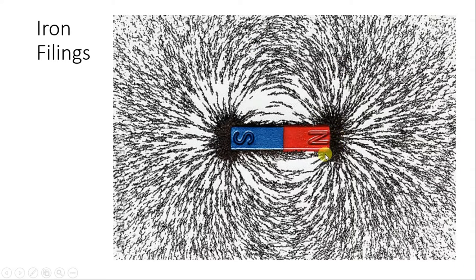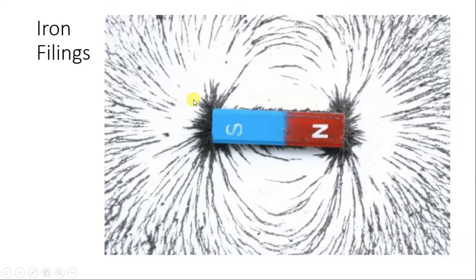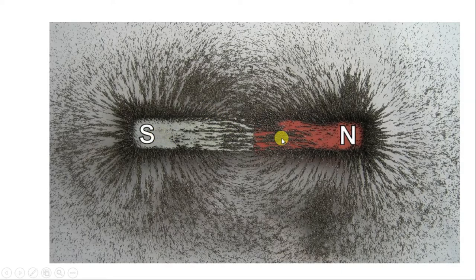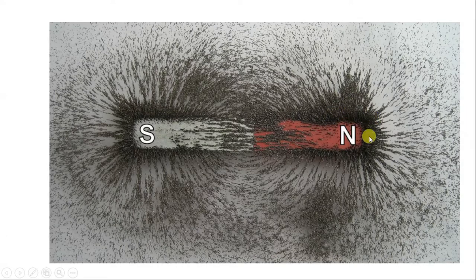The same can be visible here also — more iron filings will be concentrated near the poles and the lines of the filings will be closer to each other. As you move apart, the distance between the filings increases. If you tap the paper, the filings will align themselves in the shape of field lines. The crowding indicates a strong magnetic field.